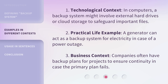Technological context: In computers, a backup system might involve external hard drives or cloud storage to safeguard important files. Practical life example: A generator can act as a backup system for electricity in case of a power outage. Business context: Companies often have backup plans for projects to ensure continuity in case the primary plan fails.